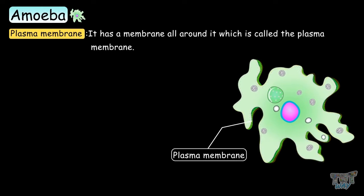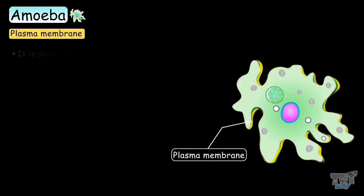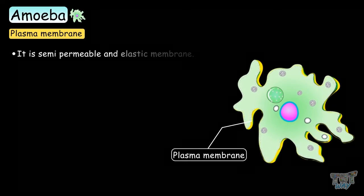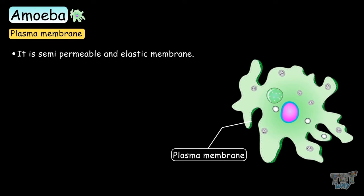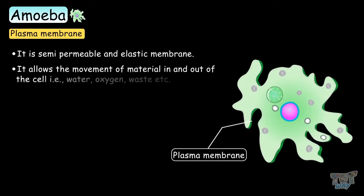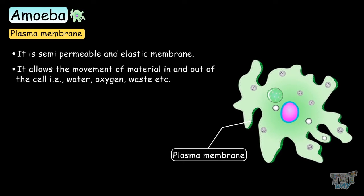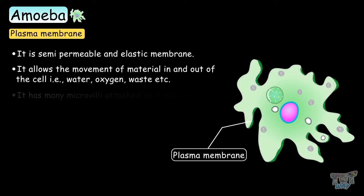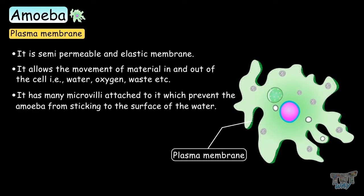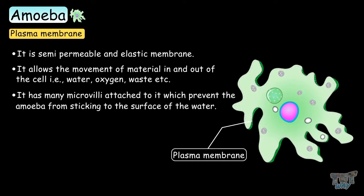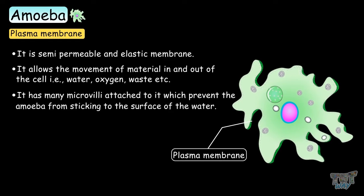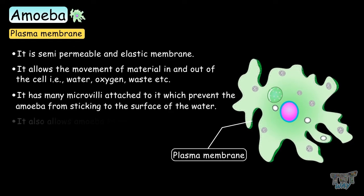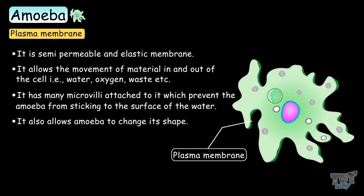The amoeba has a membrane all around it, which is called a plasma membrane. It is a semi-permeable and elastic membrane that allows the movement of materials in and out of the cell — for example, water, oxygen, waste, and so forth. It has many microvilli attached to it, which prevent the amoeba from sticking to surfaces and also allows the amoeba to change its shape.